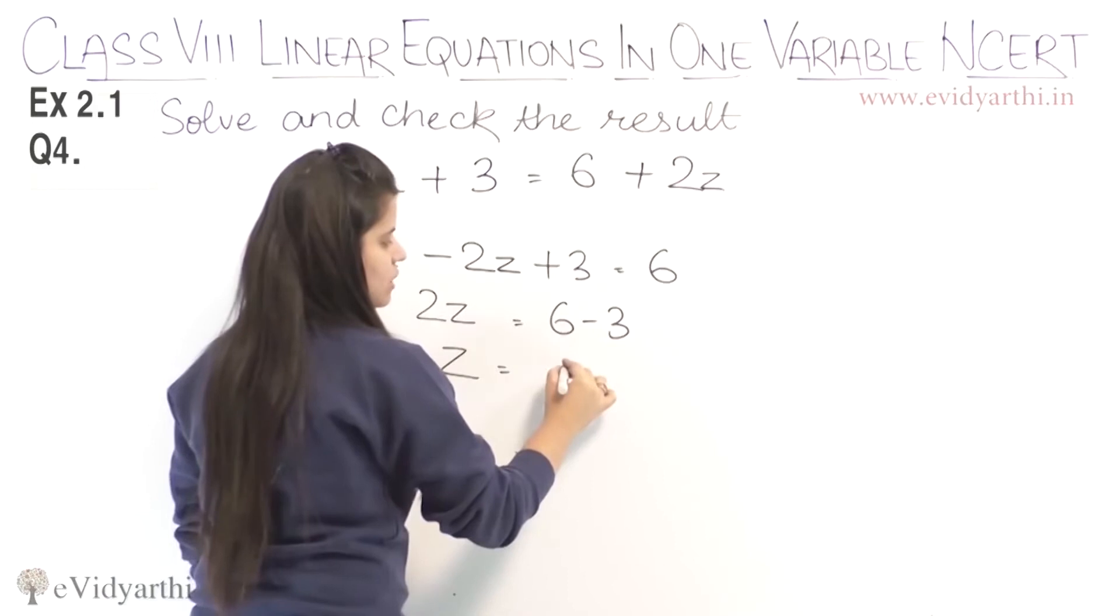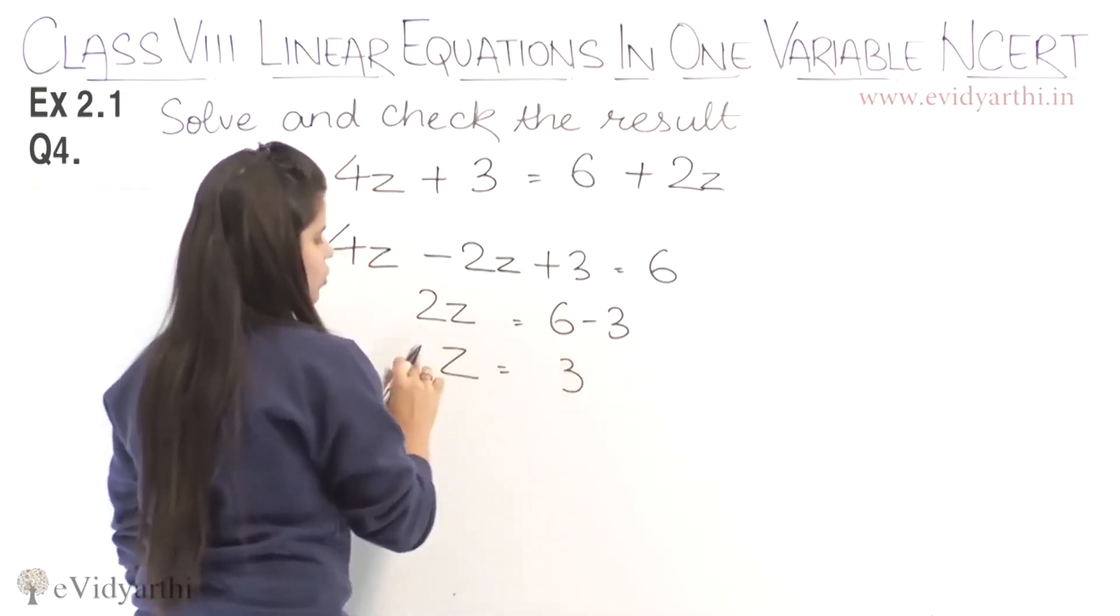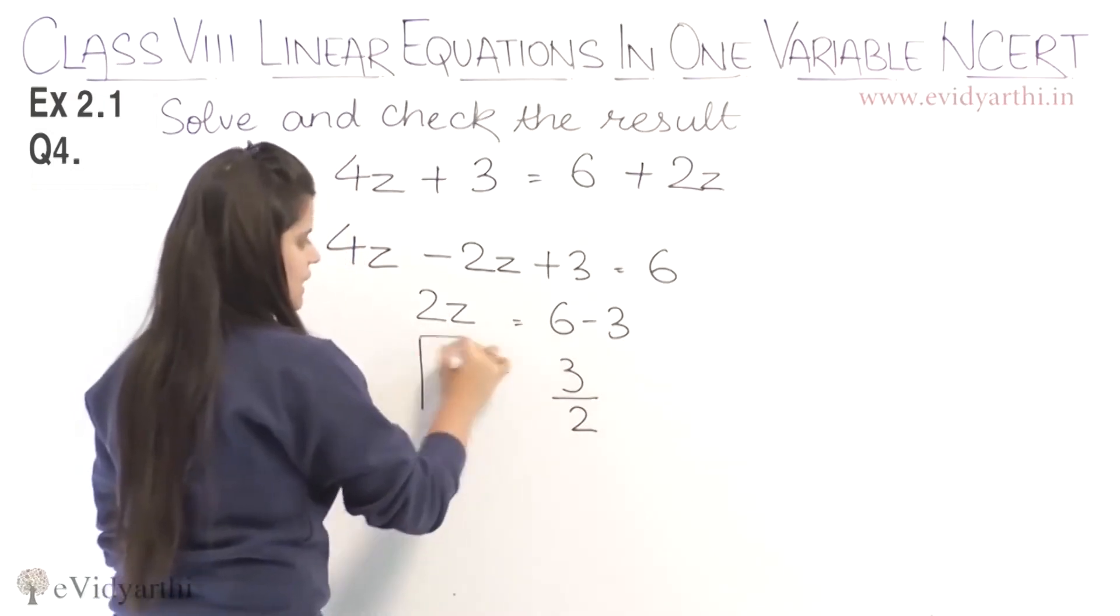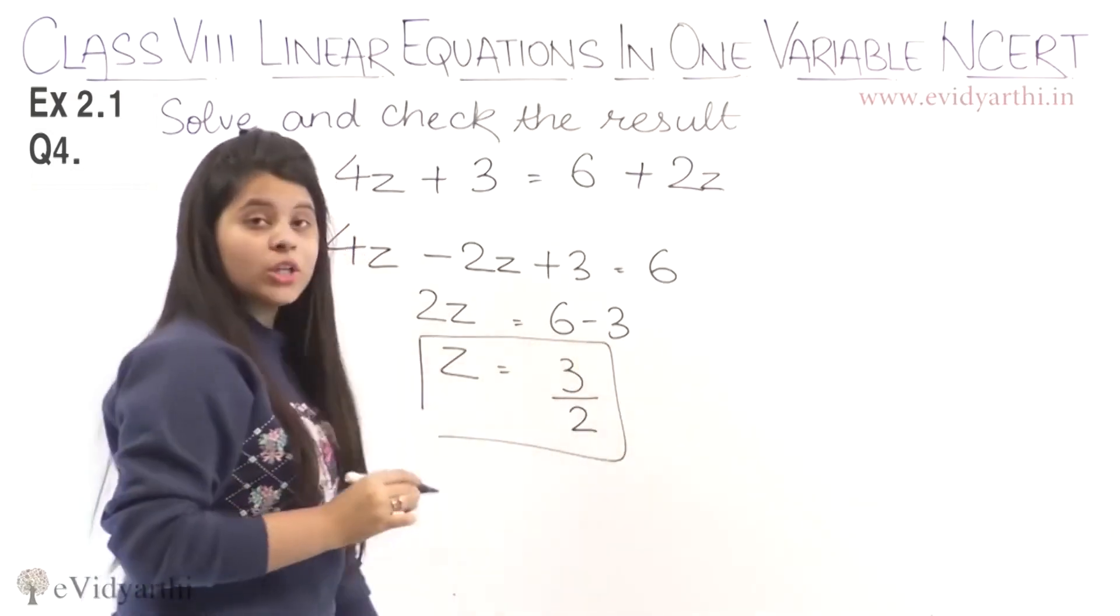So 6 minus 3 is 3, and dividing by 2, we get z equals 3 upon 2. So this means the value of z is 3/2.